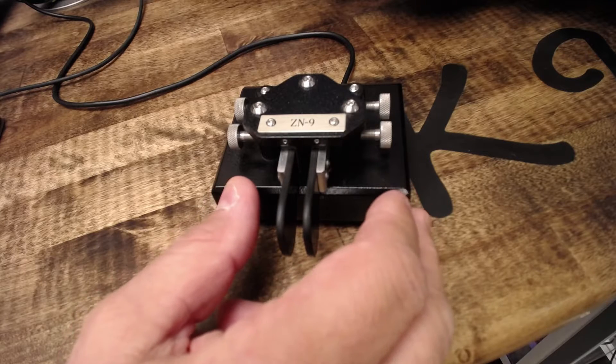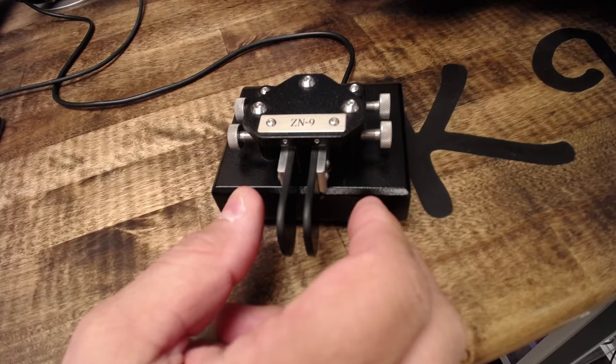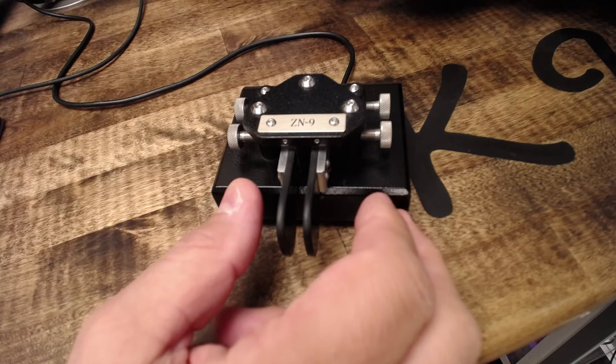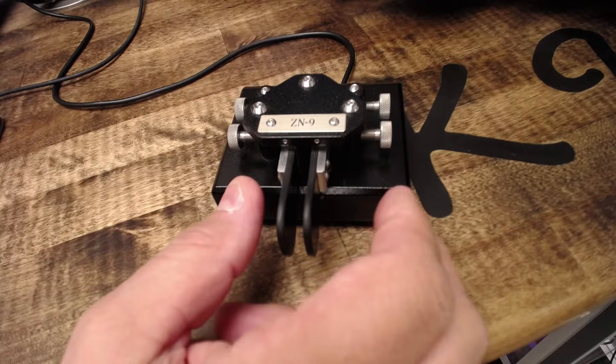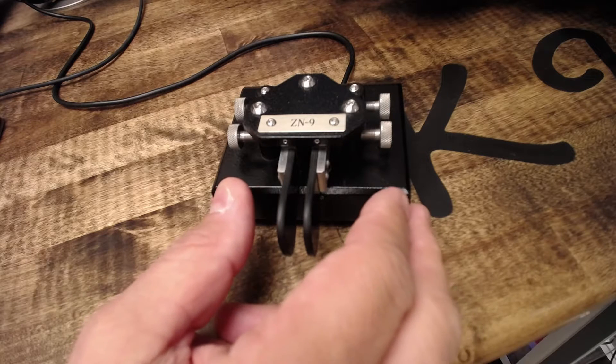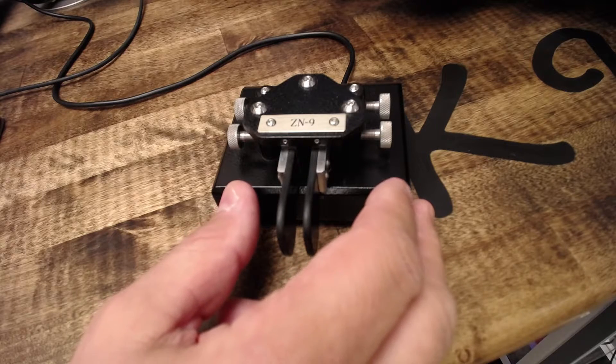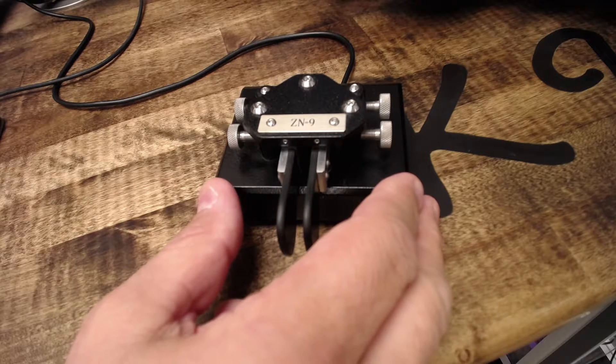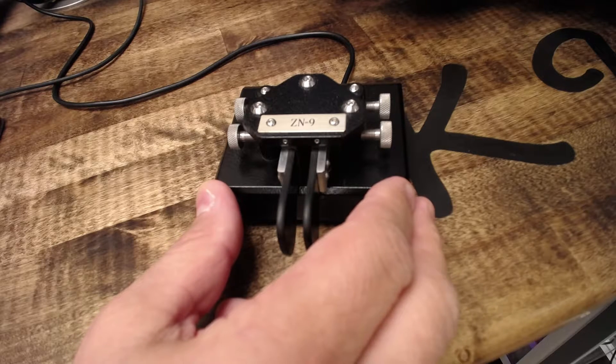If you recall what the 7 sounds like. So there's your 7. And let's do a 7 followed by a 9. Oops, that was a Z, right? So let's do a 7 and 9 at a full 18 words a minute without the Farnsworth spacing. It's kind of fast, right? So it's 7 and 9.